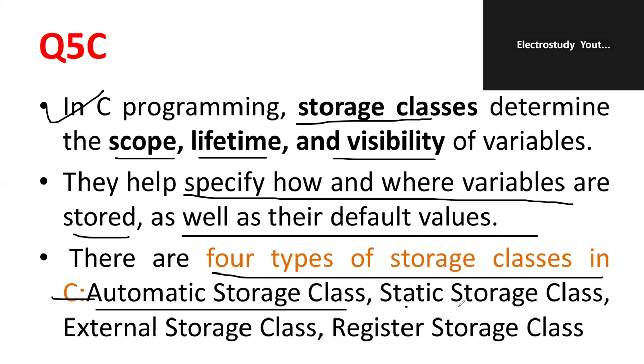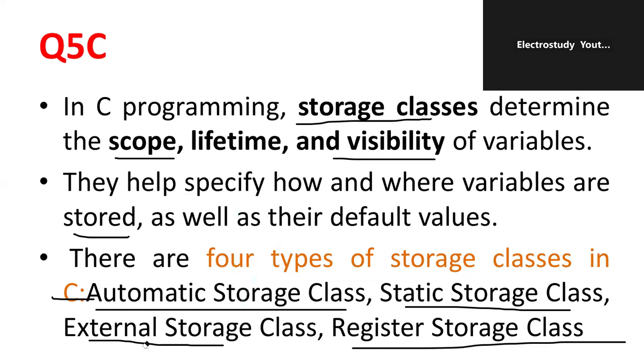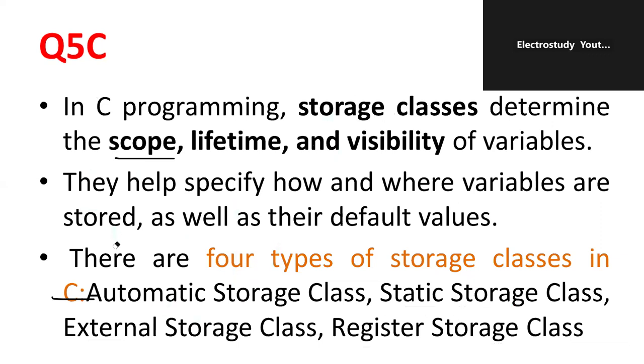Basically, 4 types of storage classes are available in C programming. What are they? Number 1, automatic storage class. Second one, static storage class. Third one, external storage class. Ultimately, register storage class. For your convenience, I prepared that thing in a tabular format. So, that you will be getting a better idea. So, request you go through the table once.